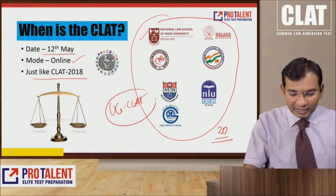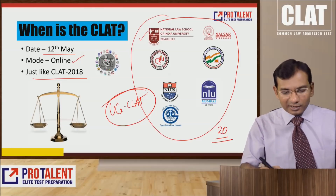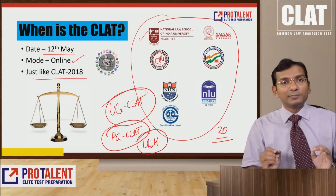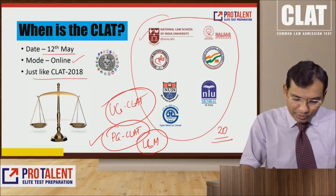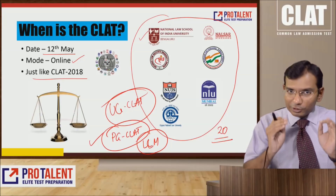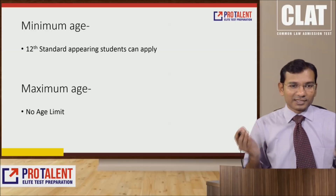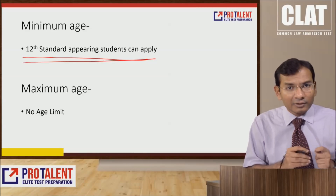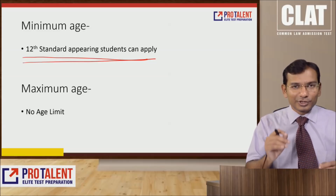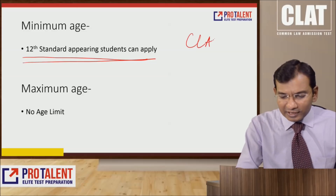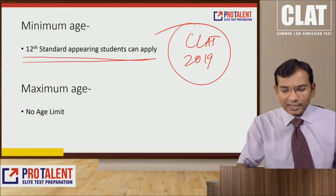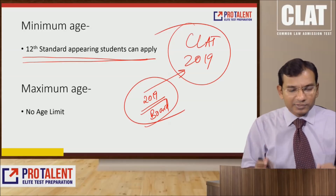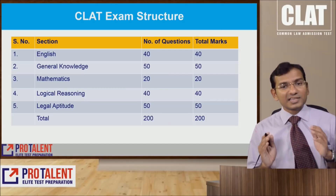We are talking about UG CLAT, not PG CLAT. In PG CLAT you get admission into LLM, not LLB. So if you are an LLB student you can go for PG CLAT. For UG CLAT there is no minimum age criteria — you just need to have cleared 12th or be appearing for 12th standard. There is also no maximum age limit.